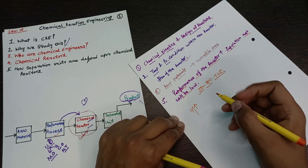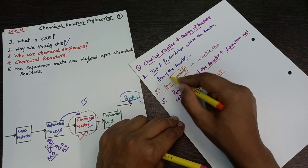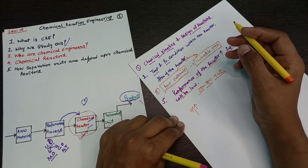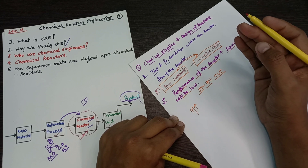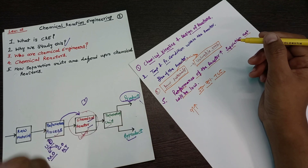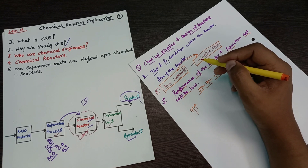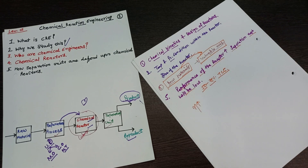What a chemical engineer does is convert raw materials into valuable products. We don't need to go into the scientific definition of chemical engineering — what we should know is what a chemical engineer does, what chemical reaction engineering is, why we study it, what chemical reactors are, and how separation units depend on chemical reactors. I hope you understood this via this video. If you liked it, subscribe to our YouTube channel and share it with your friends. If you have any difficulty in chemical reaction engineering, comment below and I'll make a separate video for that. Thank you for watching. I'll see you in the next video.